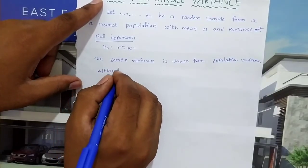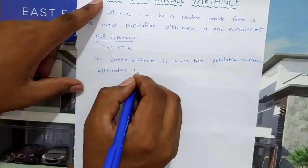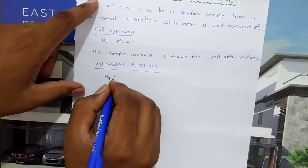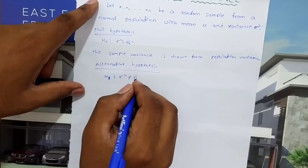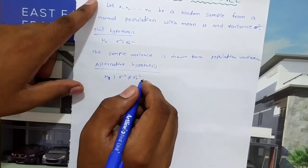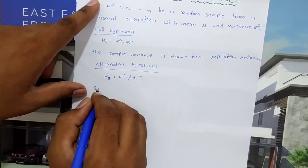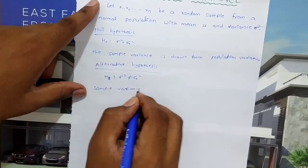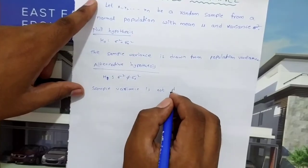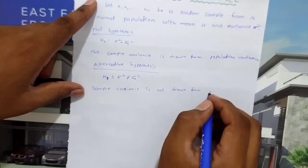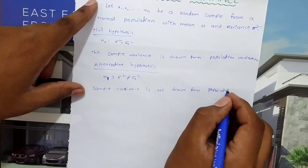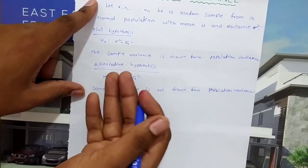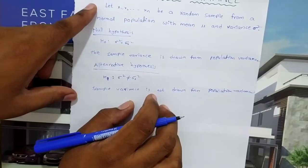Alternative hypothesis H₁: σ² ≠ σ₀². Here the sample variance is not drawn from the population variance — there is a significant difference between sample variance and population variance.